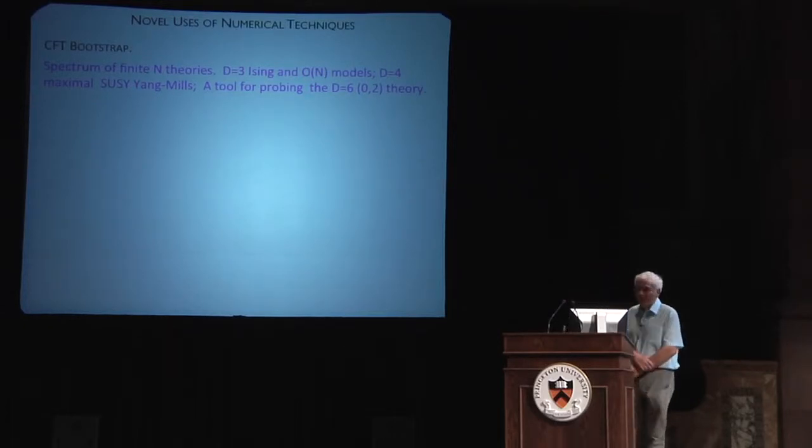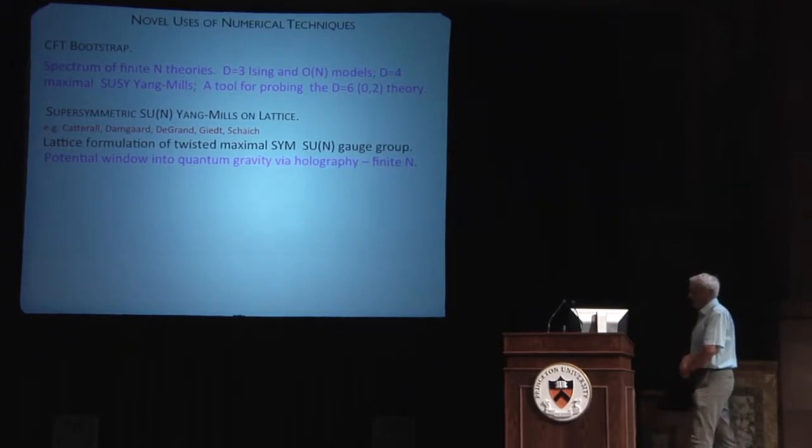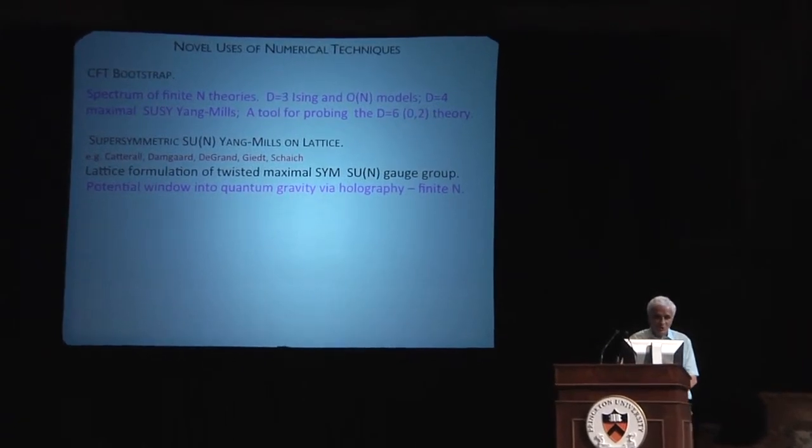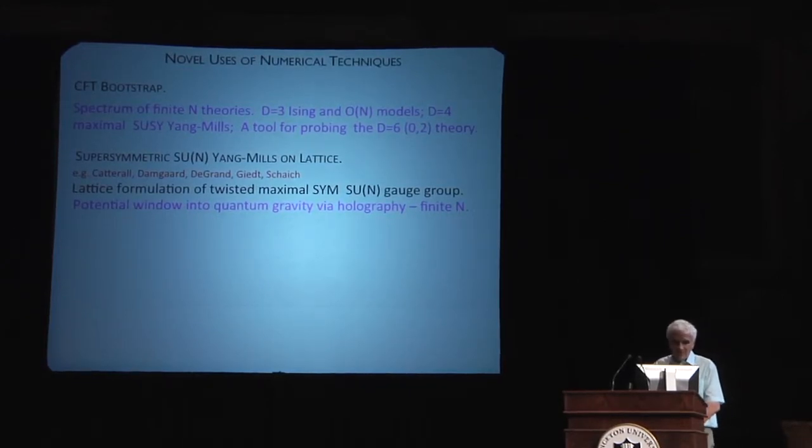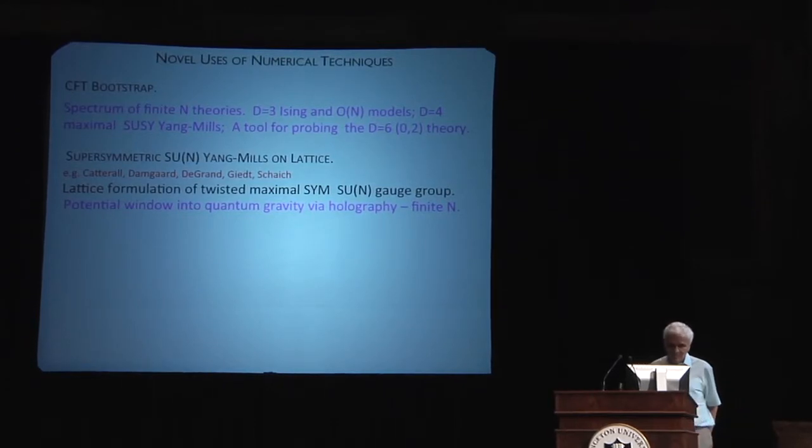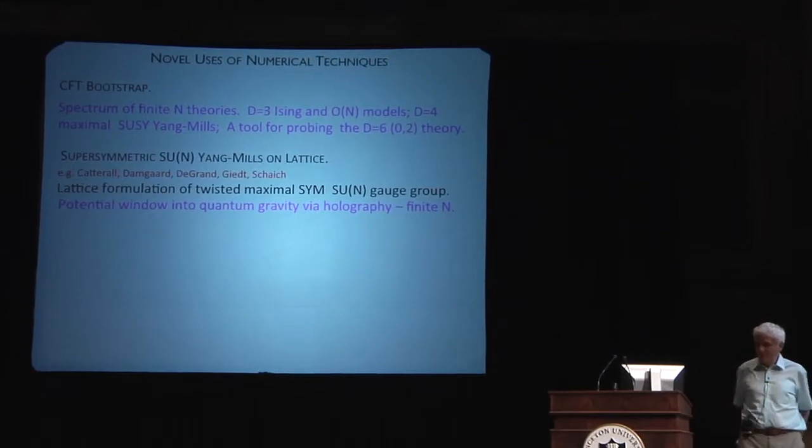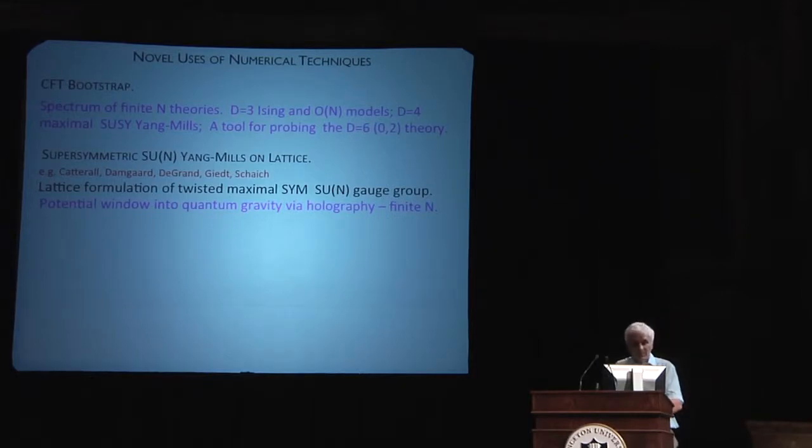With regard to this particular conference, the idea of being able to say something about the (6,2) theory is very exciting. Another completely different subject, which I don't think was talked about at this conference, but nevertheless promises to be exciting, is that finally there seems to be some progress in doing computations, numerical computations, in N equals 4 supersymmetric Yang-Mills using lattice techniques. There is, in particular, a formulation based on a twisted version of the theory, which has great potential for producing interesting results.